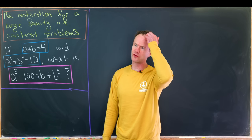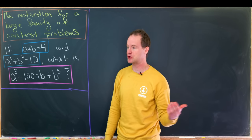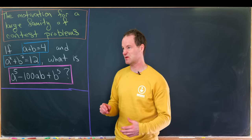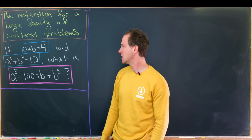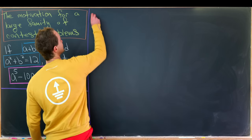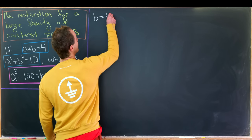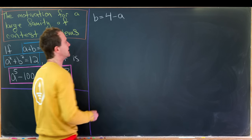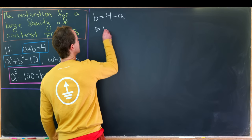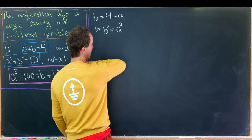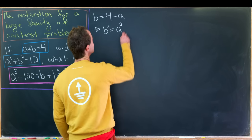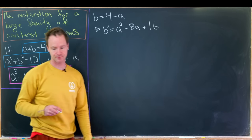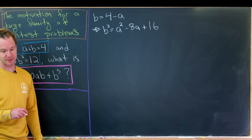We're going to approach this without any prior knowledge of what we'll do later. We'll just kind of do it by following our nose and hacking together a solution. Let's start by noticing that b is equal to 4 minus a — that's pretty clear from the first equation. We can square both sides and see that b squared equals a squared minus 8a plus 16.